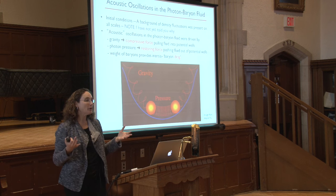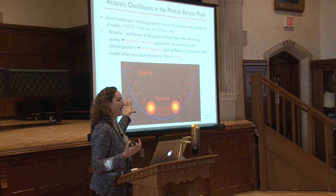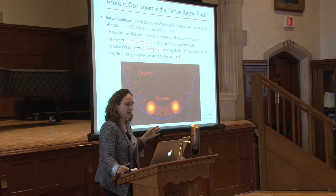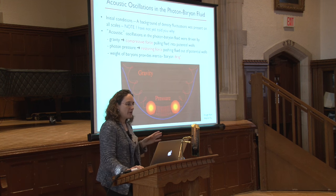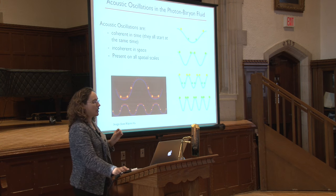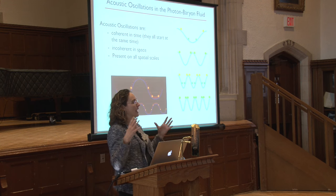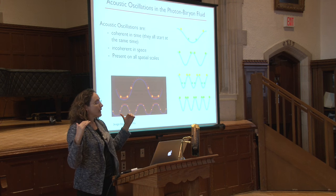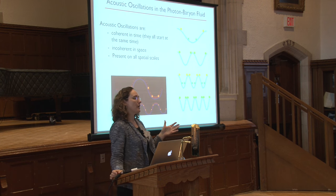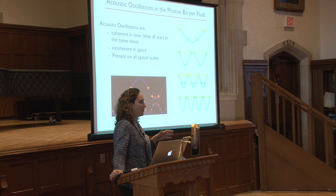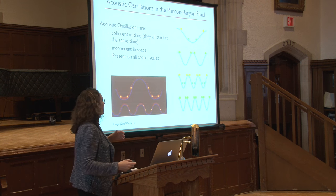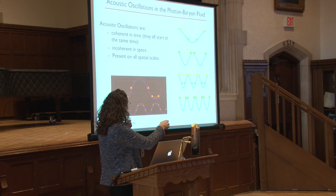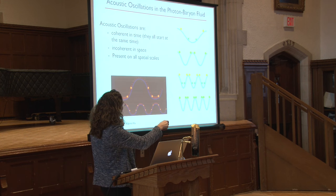The fluid is being pulled into gravitational wells, the photon pressure builds up, and then it expands. As the photon pressure decreases, gravitational pull starts to win again and it contracts. You get acoustic oscillations in the photon-baryon plasma, with the weight of the baryons providing inertial drag. The potential wells are formed primarily out of dark matter, so the baryons are not driving the density fluctuations — something we did not know a priori but can extract from careful CMB measurements.